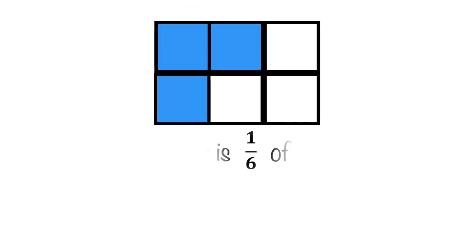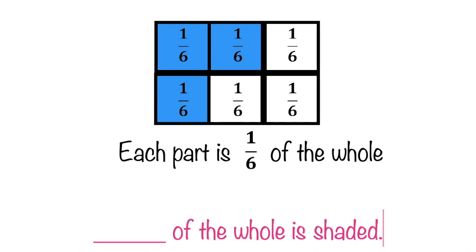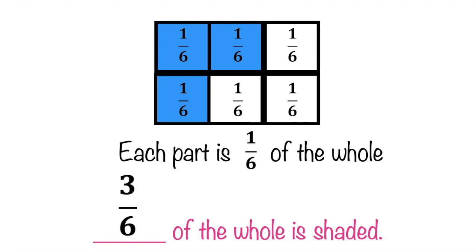How about if we have this one? Each part is one-fifth of the whole. My question is, how many are shaded? Or what is the fraction of the shaded part? Let's count it together: one, two, three. That means the fraction of the shaded part is three-sixths. Is that clear?